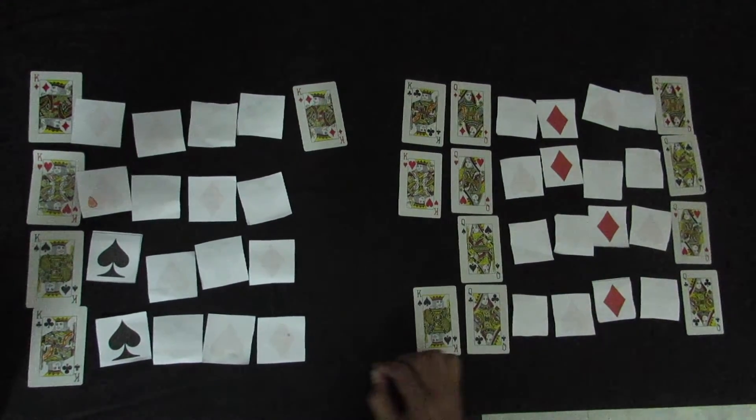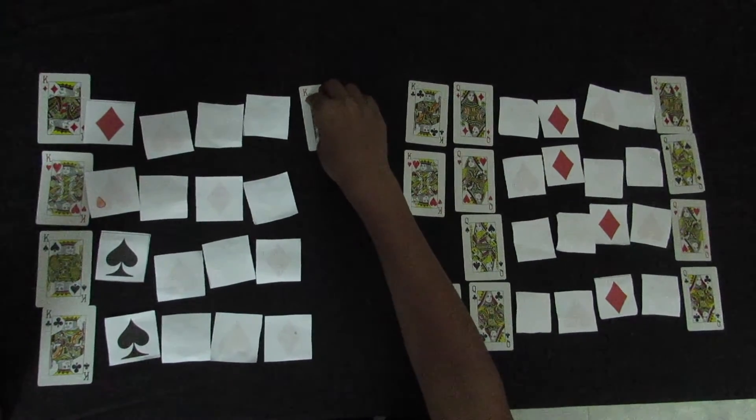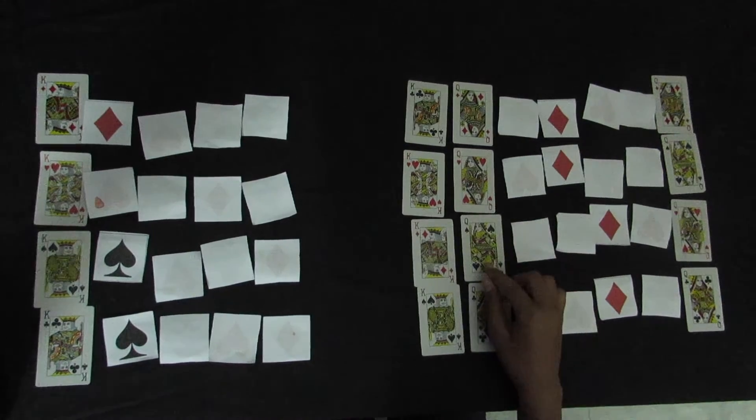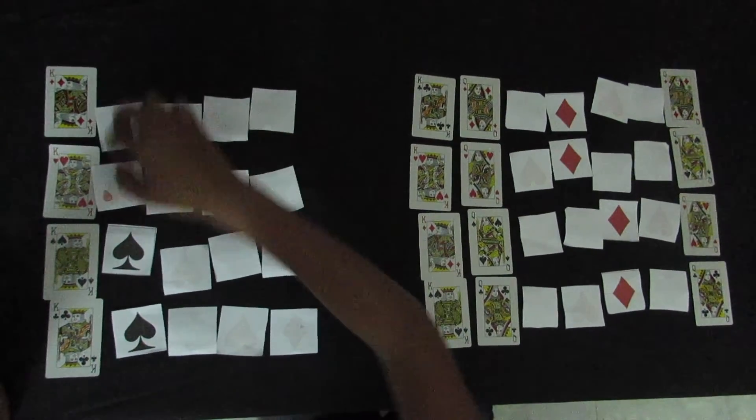Now, in the final round, the king of diamonds has no choice but to go for the queen of spades. And the queen of spades has no choice but to accept the king of diamonds. And hence, all stable matches are made.